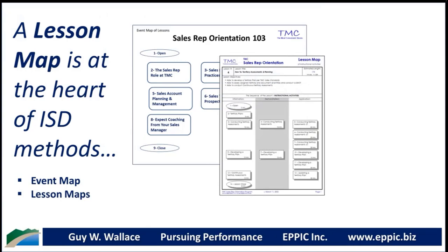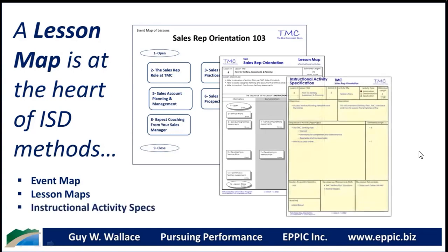That event map of lessons would then have seven lesson maps. For those whose screen is large enough, up in the top right corner it says 'lesson map of instructional activities' — those are all the little rectangular boxes in the info, demo, and application columns. This is how I create the design working with a design team, and how I present it to my clients to get their approval or revisions.